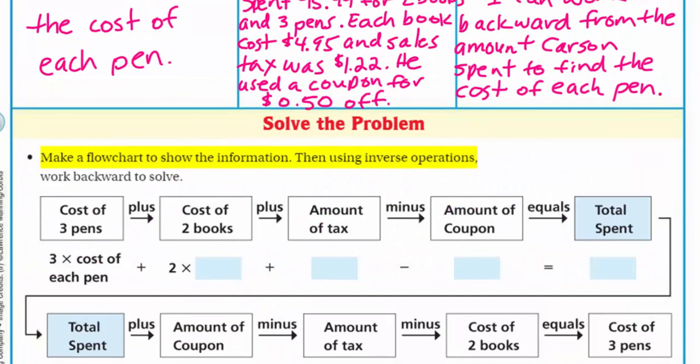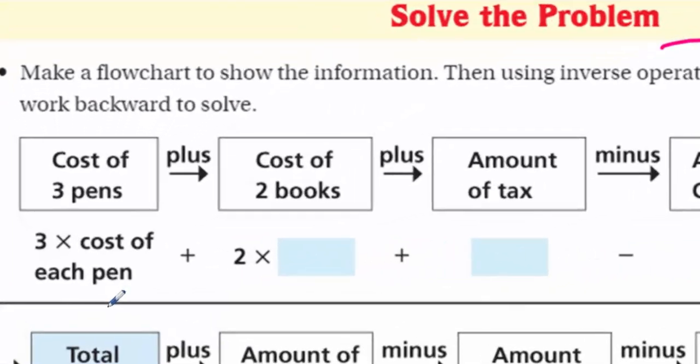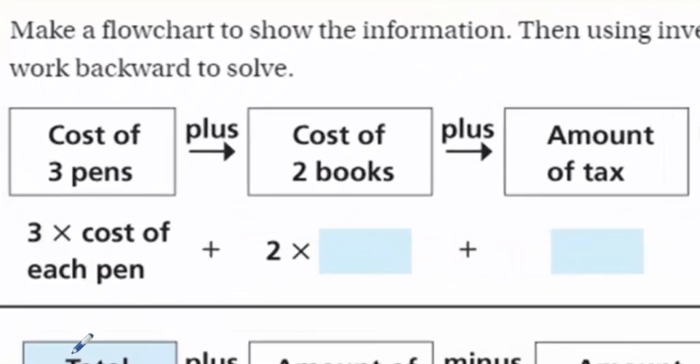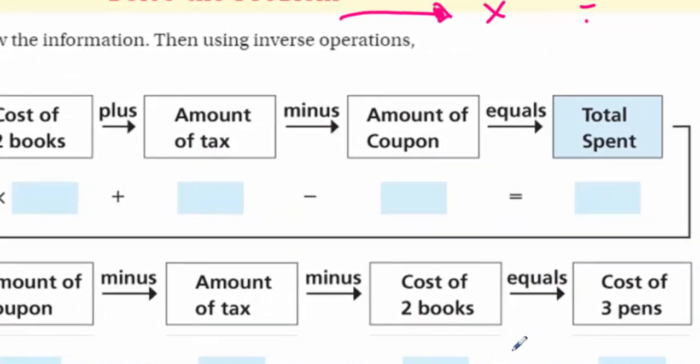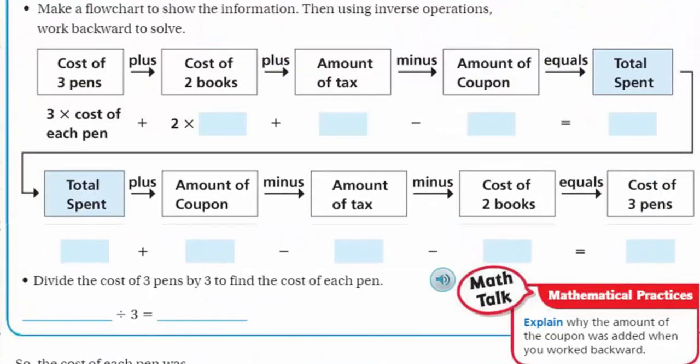Well, Carson did spend $15.99 for two books and three pens. That seems important. Also, we need to know that each book costs $4.95. And we need to know the sales tax on the total purchase. Also, he used the coupon for $0.50 off. There's a lot of information there, but let's get all that down. I managed to get it in there.